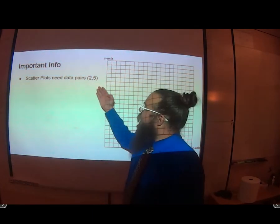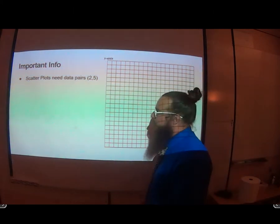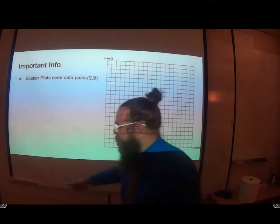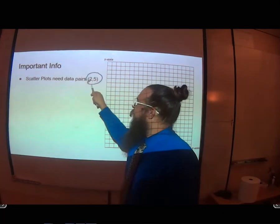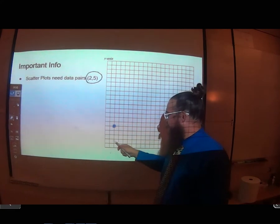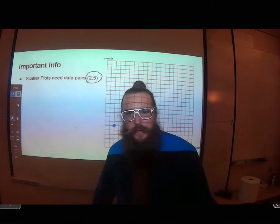When you're graphing on a scatter plot, your data goes in pairs. There's always two numbers - an x-coordinate and a y-coordinate. So if we're going to graph the point 2-5, go over 2, up 5. There's that point right there.